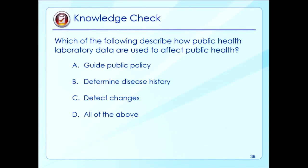Which of the following describe how public health laboratory data are used to affect public health? A, guide public policy; B, determine disease history; C, detect changes; and D, all of the above. The correct answer is D, all of the above.